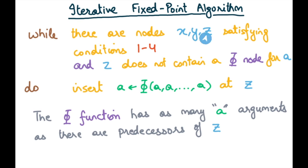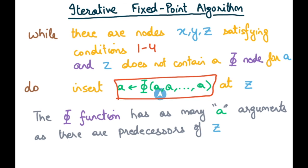The algorithm simply identifies three nodes x, y, and z satisfying all four conditions — distinct blocks x and y containing definitions of a, with non-empty paths from x to z and y to z that share no node except z. If z does not already contain a phi node for a, insert one. The number of arguments in the phi function equals the number of predecessors of basic block z.